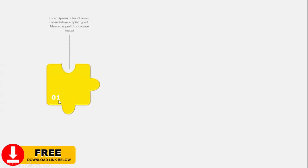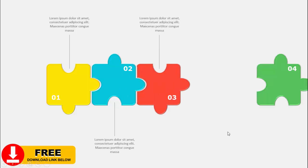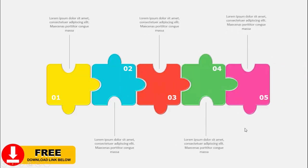In today's tutorial I'm going to show you how to create a jigsaw puzzle design in PowerPoint. When I click, the first puzzle piece appears — you can put a number here and add detailed text. When I click again, a different color piece appears with option 2 and detailed text. You can have options 3, 4, and 5, and increase or decrease these options depending on your requirement.